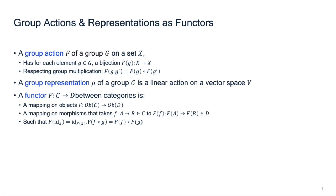Now we generalize so we can talk not only about group actions from groups, but maps between arbitrary categories — and that is called a functor. A functor from category C to category D first maps objects: for every object in C it gives an object in D. Furthermore, whenever we have a morphism from A to B in C, we get a morphism from F(A) to F(B) in D. We also require that composition is preserved.